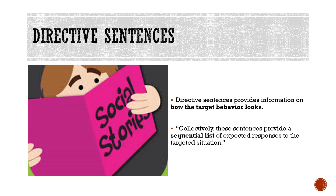The second type of sentences is directive sentences. These directive sentences individually state information on how the target behavior should look. Collectively, these sentences provide a sequential list of the expected target behavior within a specific situation, highlighting what the student needs to do in order to be successful. It is very important to write it in positive language. For example, we would write 'I can walk' instead of 'I will not run.' The end result is that the student will have a personalized task analysis of what the target behavior looks like. Directive sentences often start with 'I will.'